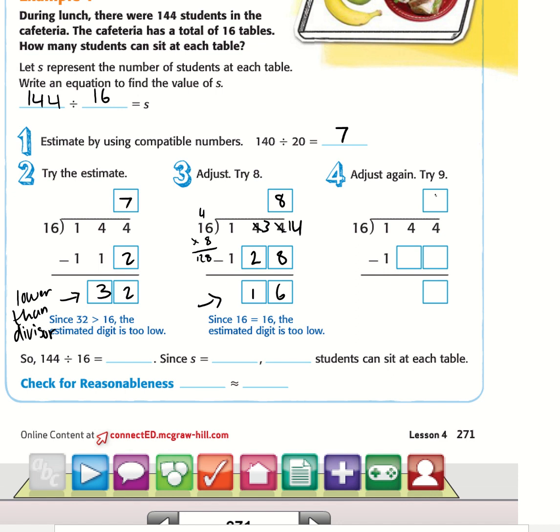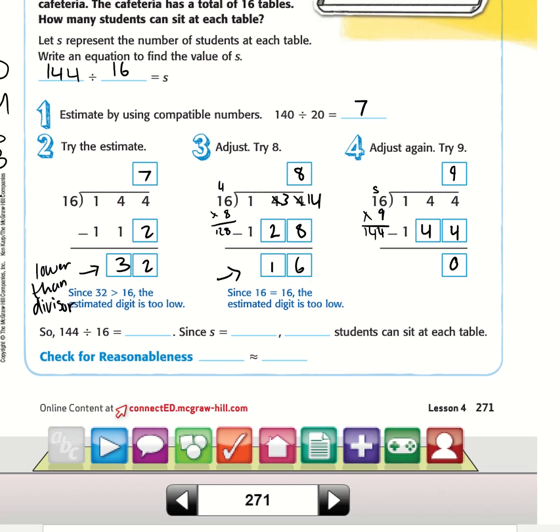Instead of 16, we're going to do the maximum number, which is 9. 9 times 16 is 54, equals 144. Now we subtract, that equals 0. We can no longer bring down, so that's going to be a final answer of 9. So that equals 9, s equals 9. So 9 students can sit at each table.